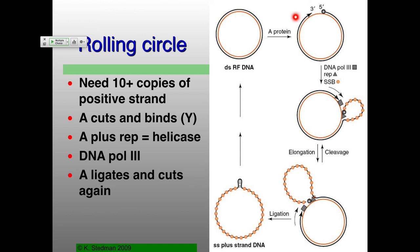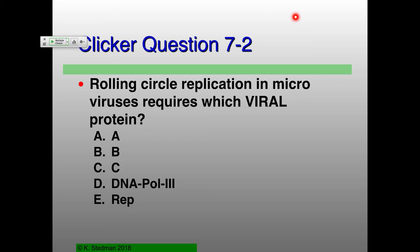Are we happy on rolling circle replication? Are we ready to answer a clicker question on it? Rolling circle replication in microvirus requires which viral protein? A, B, C, DNA polymerase III, or Rep?